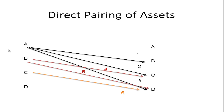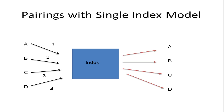Let's look at a simple example. Suppose we have four stocks: A, B, C, and D. If we directly paired them, we'd need to find the relationship between A and B, A and C, A and D, B and C, B and D, and C and D — six pairs. Using the single index model, we instead find A's, B's, C's, and D's individual relationships to the index, and from those we can infer any combination: B with A, B with C, A with D — all through the index.